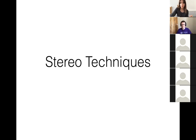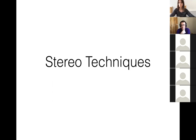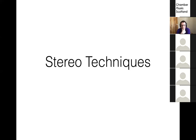A question from Sue: she uses a Zoom H2N — can it do all of these things? Yes — a handheld recorder will almost certainly have small condenser mics in it. It's about working out what stereo system it's using. I think the Zoom H2N has a forwards arrow on the top. I'll talk about the advantages and disadvantages of the different systems and try to point out not just the negative things but the positive things and how to make the most of the kit you've got.